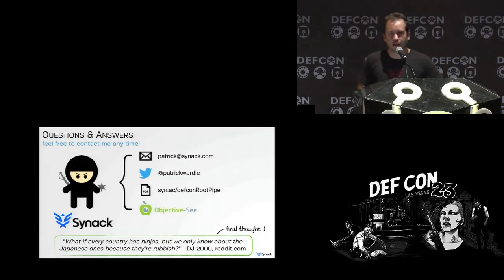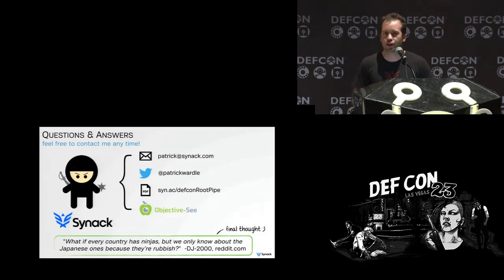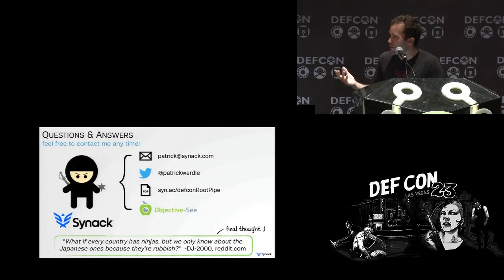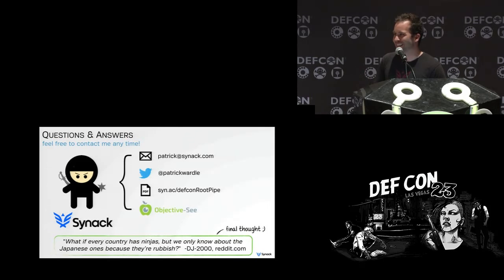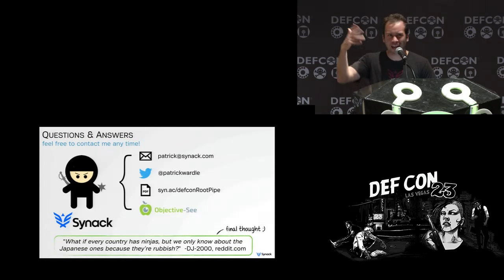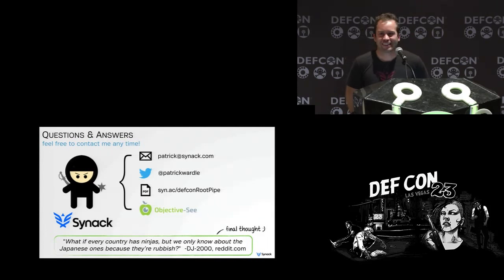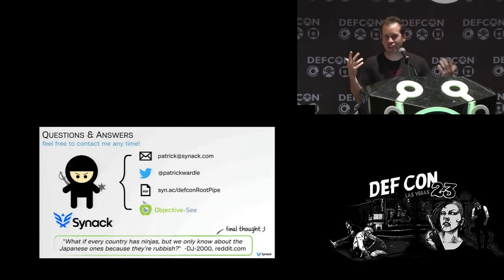The question was about the NSA used to release documents on how to lock down and secure your Mac, and they haven't done this for a certain number of years — why? I'm not sure. I would like to see that too because they were actually pretty good with good suggestions. I have no idea why they don't do that. I'll email some of my NSA contacts and ask them — I don't think they talk to me anymore. But thank you guys, I really appreciate it. Email me or chat to me if you have any other questions.